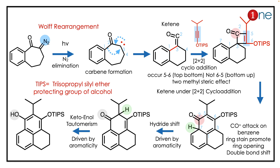The answer lies in the Wolff rearrangement. In the first step of the reaction, you are using light. Nitrogen is a very good leaving group — even a little energy pushes it out. So you have carbene formation: suddenly losing two bonds creates the carbene.